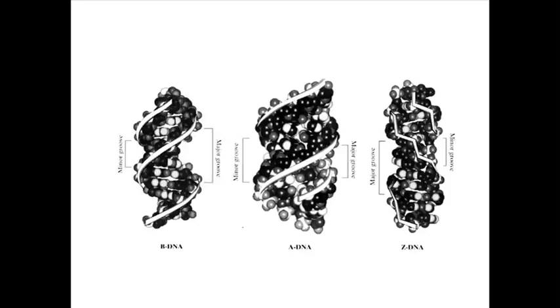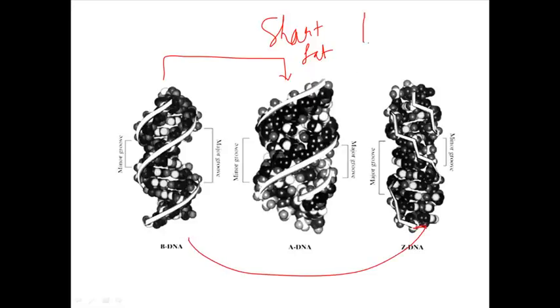Genetic information exists in three different types of DNA confirmation. This is the B-DNA, which is the most common one and is much more aligned. In case of A-DNA, you can see this is a short, fat version of the B-DNA.